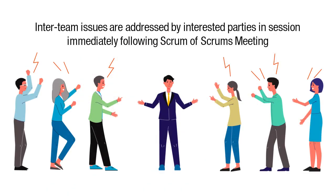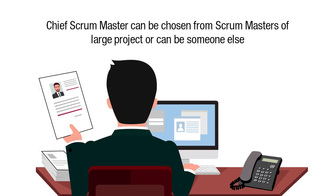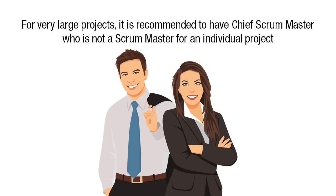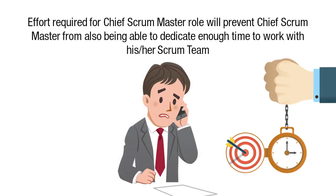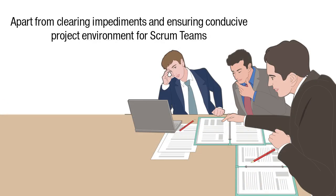Typically, any inter-team issues are addressed by the interested parties in a session immediately following the Scrum of Scrums meeting. The Chief Scrum Master facilitates the session. The Chief Scrum Master can be chosen from the Scrum masters of the large project or can be someone else. For very large projects, it is recommended to have a Chief Scrum Master who is not also a Scrum master for an individual project, because the effort required for the Chief Scrum Master role will prevent the Chief Scrum Master from also being able to dedicate enough time to work with his or her Scrum team. In either case, the Chief Scrum Master should have enough Scrum experience to be able to foster collaboration and to help and coach others with the implementation of Scrum for a smooth delivery of the project's products.